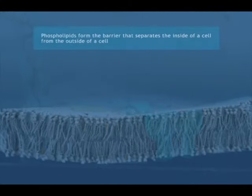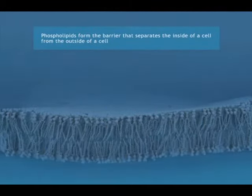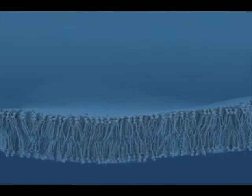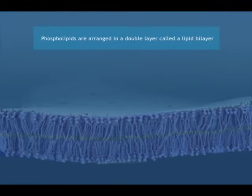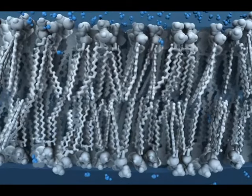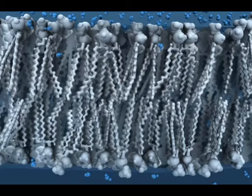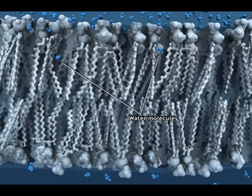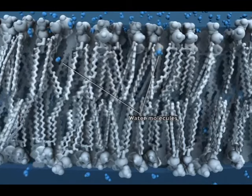Lipids form the barrier that separates the inside of a cell from the outside of a cell. The phospholipids are arranged in a double layer called a lipid bilayer. A pure phospholipid bilayer would allow a very limited number of substances to pass through. Water can diffuse across because it is so small, but this is a slow process.